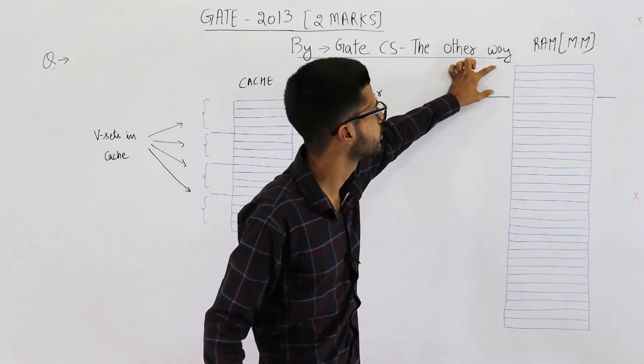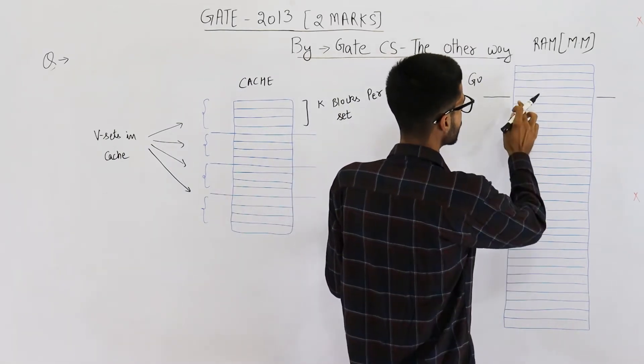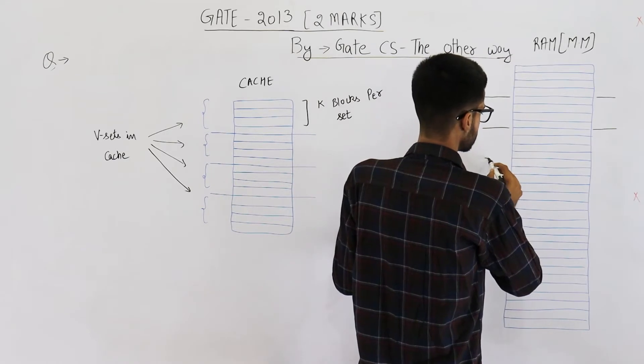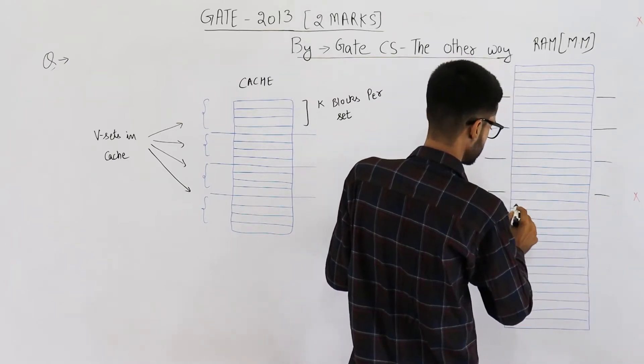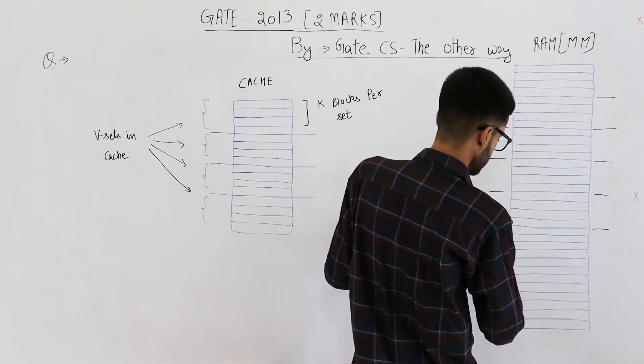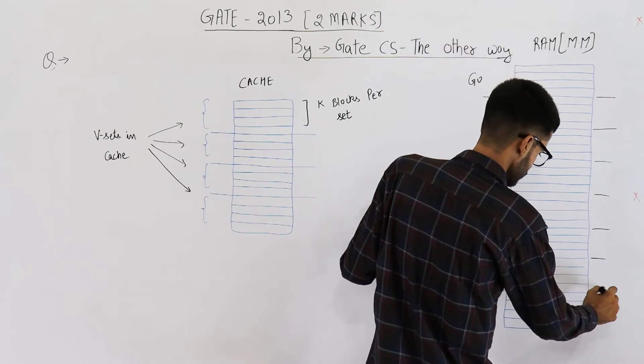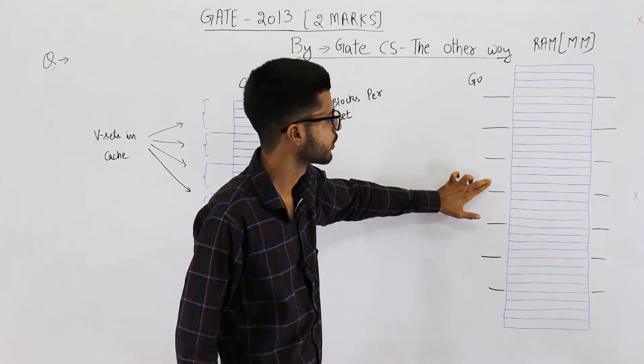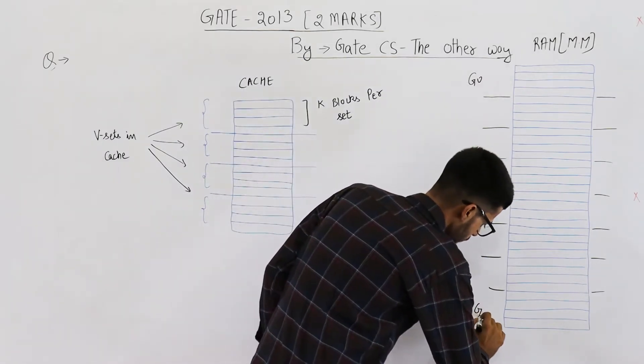1, 2, 3, 4. This is group number 0. Similarly let me draw all these groups. So we have one, two, three, four, five, six, seven, eight groups in a RAM numbered from group 0 to group 7.